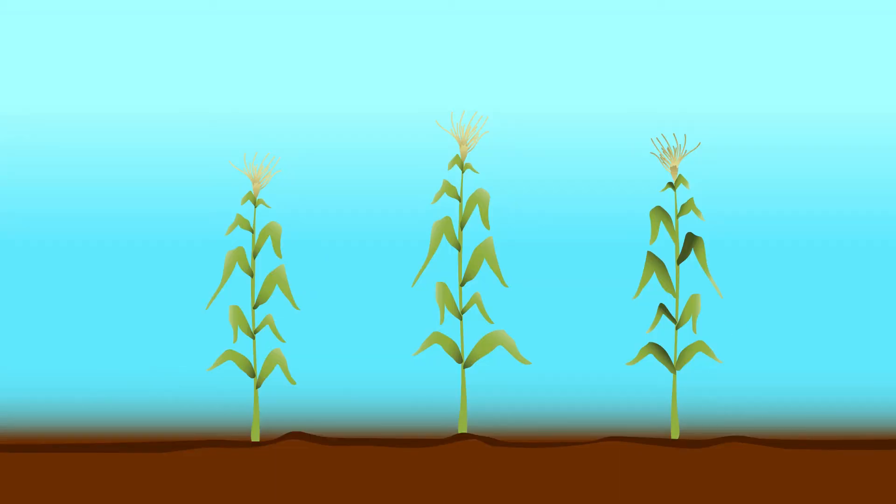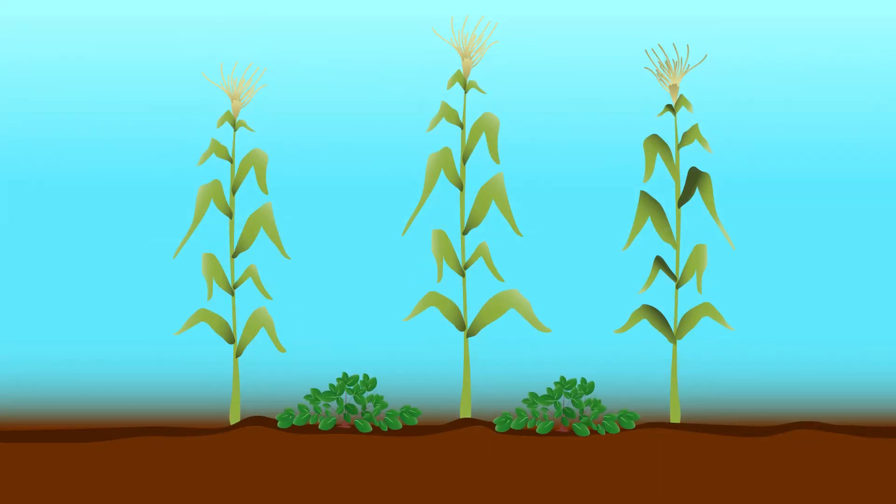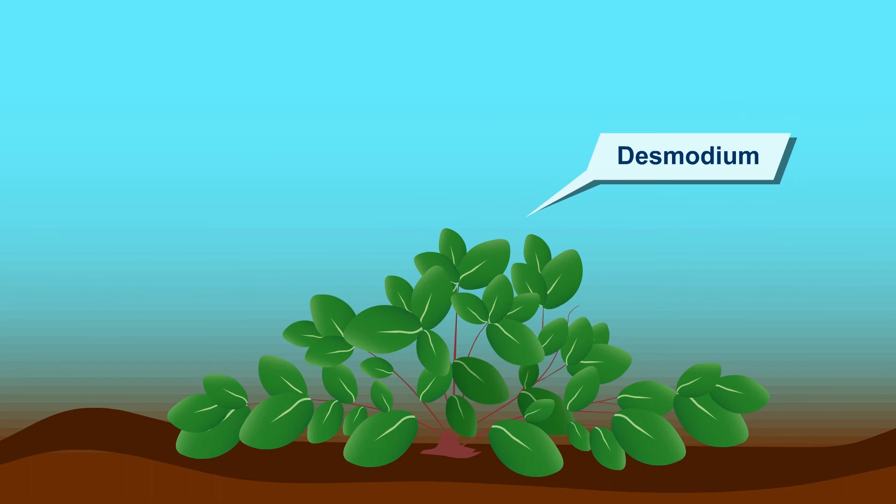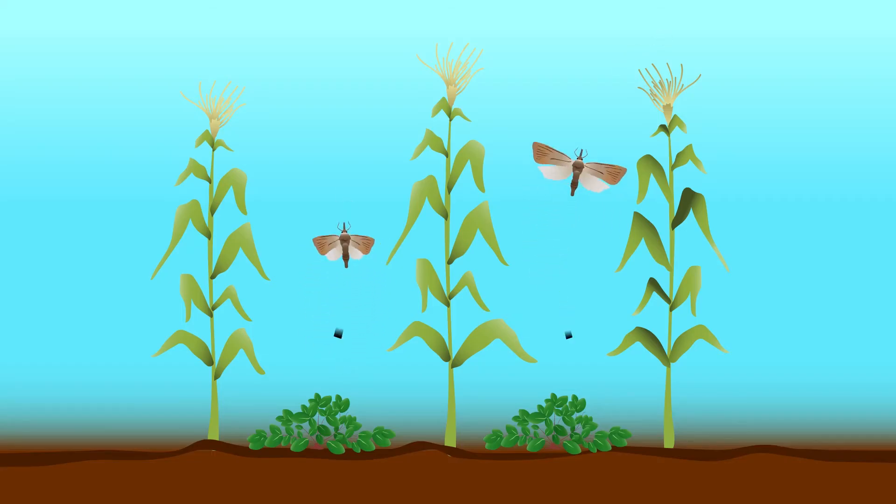To try the push-pull technique, start by planting your maize in rows of at least two feet, or about 75 centimeters, between the rows. In between your maize rows, plant desmodium. Desmodium is a legume plant that produces chemicals that the stem borers don't like. The moths are then repelled or pushed out of the maize.